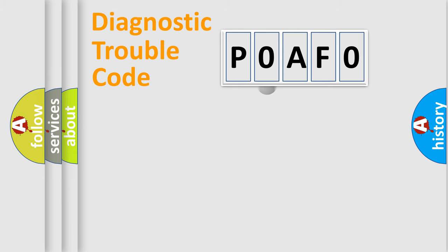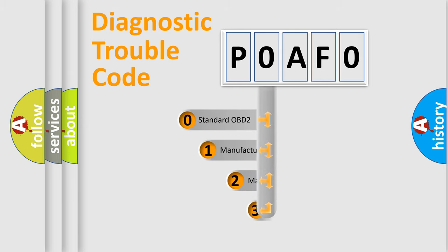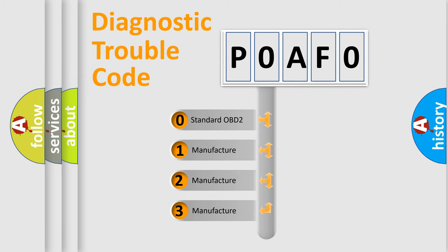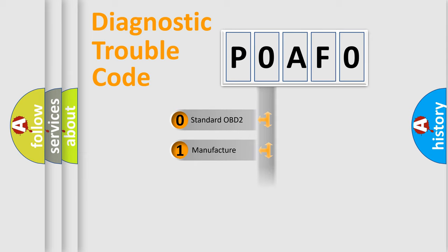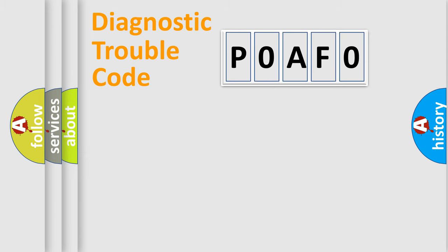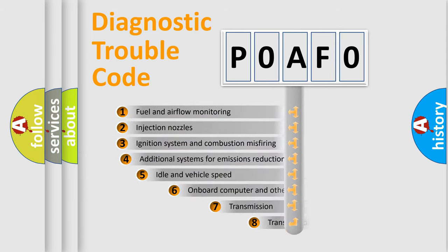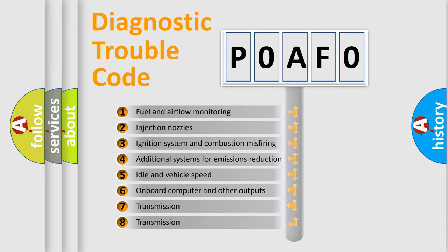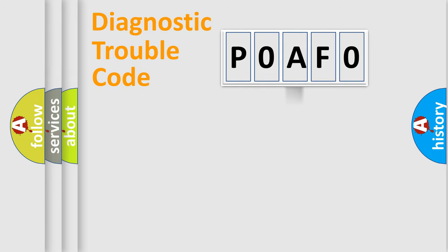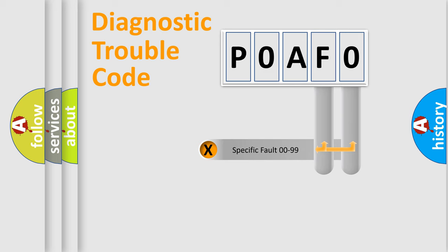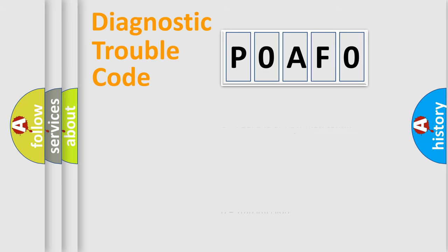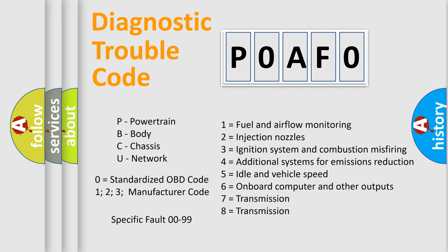This distribution is defined in the first character of the code. If the second character is expressed as zero, it is a standardized error. In the case of numbers 1, 2, or 3, it is a more specific expression of a car-specific error. The third character specifies a subset of errors. This distribution is valid only for the standardized DTC code. Only the last two characters define the specific fault of the group, and such division is valid only if the second character code is expressed by the number zero.